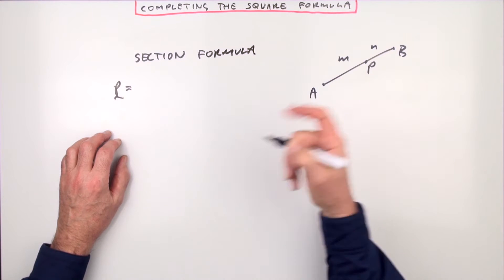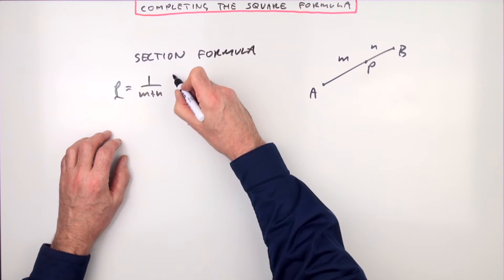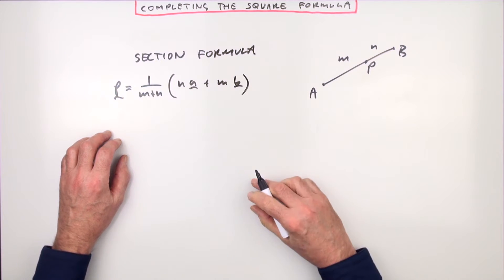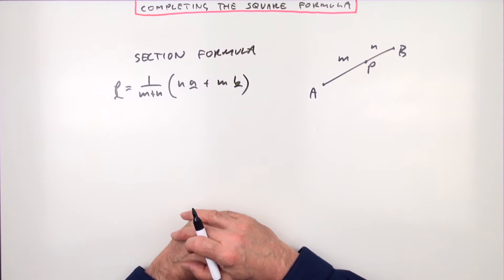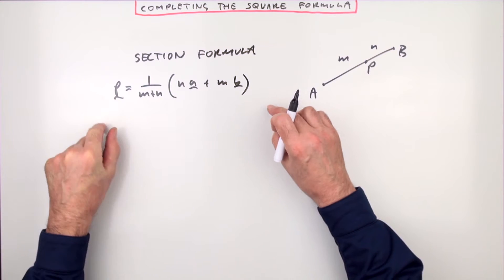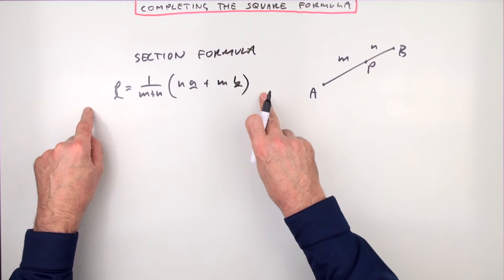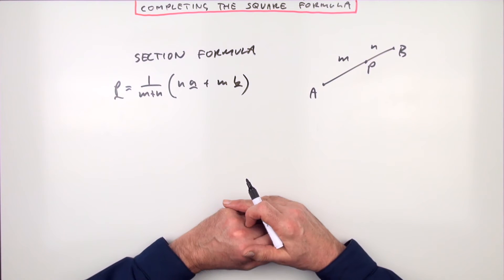The position vector of this point is 1 over M plus N, that's the total number of steps, of N times A plus M times B. However, that seems to have been tucked away out of sight lately, like some old embarrassing eccentric relative. Oh, here's the section formula, quick, close the curtains. Yet, you seem to readily embrace, simple wee pal, the midpoint formula.